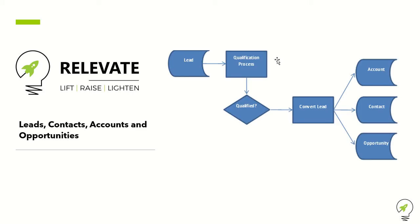If qualified, convert the lead — generally into a few things. If you want to save someone's details for later, maybe they're a supplier or a potential referrer, convert them into a contact. If they've got a company associated with them, set up an account so the contact is associated with the account. If they're going to be a customer — an individual might start as a contact and an opportunity. If they're a business client, they'll have an account, a contact, and an opportunity.